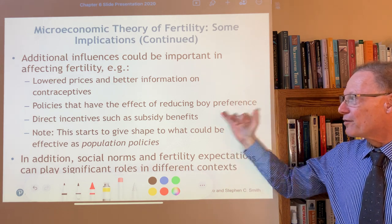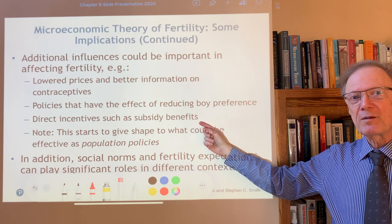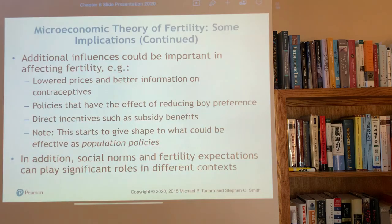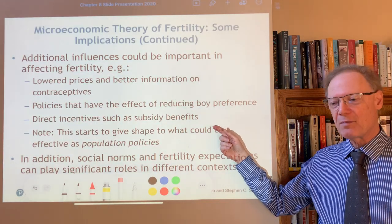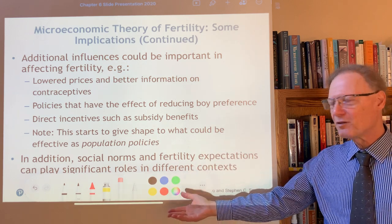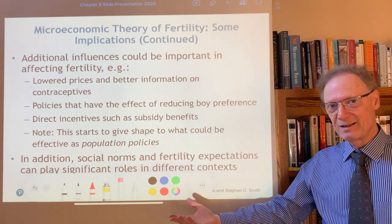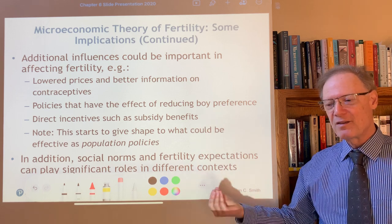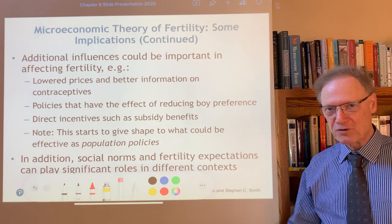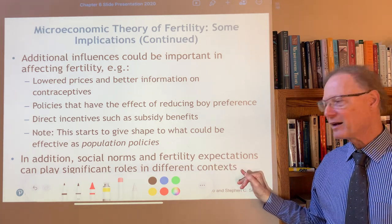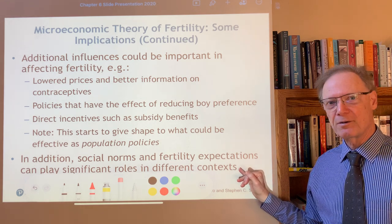Direct incentives, including subsidy benefits for having fewer children, have also been found to have some effect — this was part of what was done in China. Under the one-child policy, there were cases where two children were permitted, and eventually the policy was lifted. But even when having more children was restricted, there were incentives: a single child received very good education benefits, while if you had two children even the first child lost those benefits.